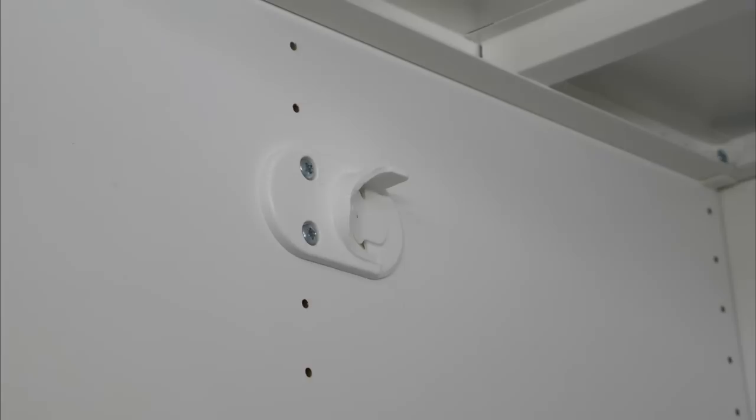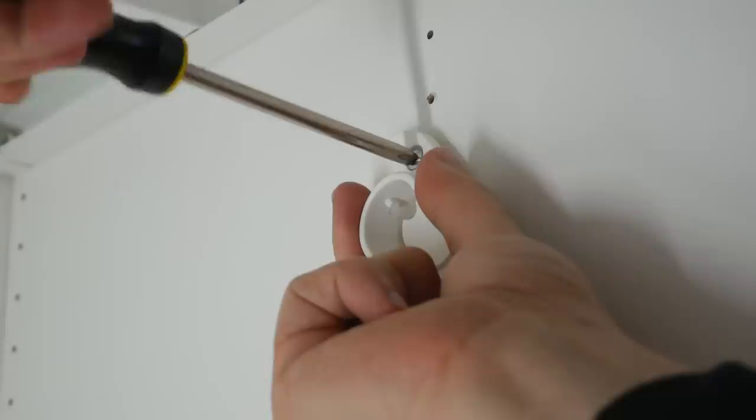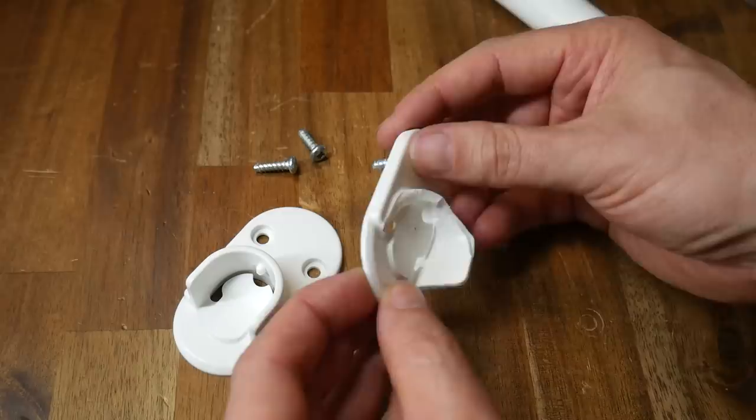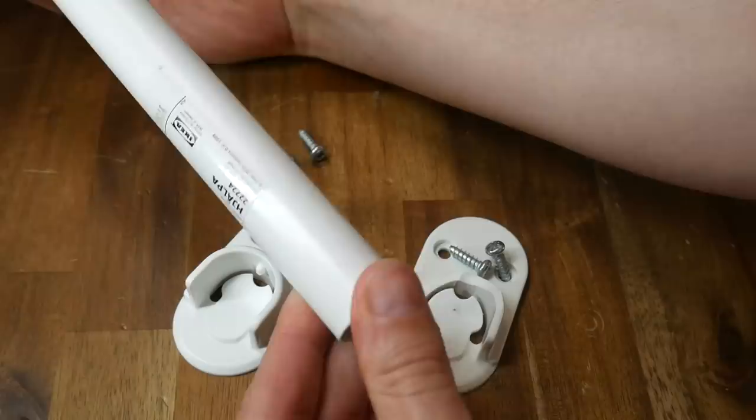I started by unscrewing and removing the broken clip, as well as a good one, as I needed a complete part to take measurements from. The original part is injection molded plastic, and a failure like this should be rare because they have uniform strength throughout the part. But for whatever reason, this part has failed.